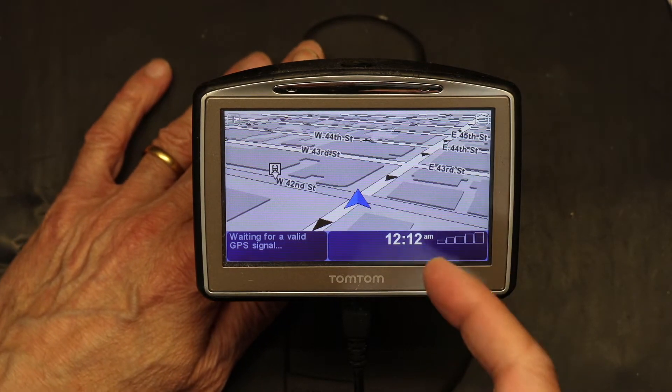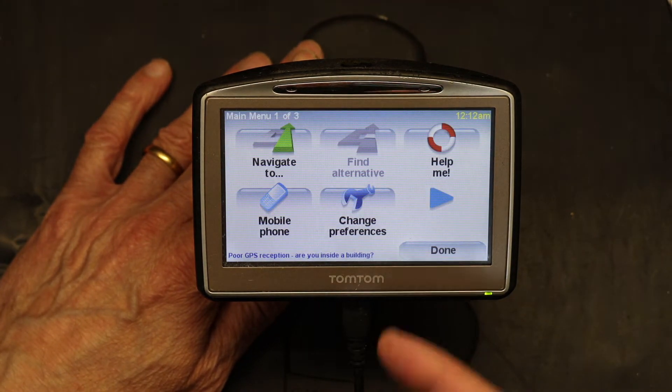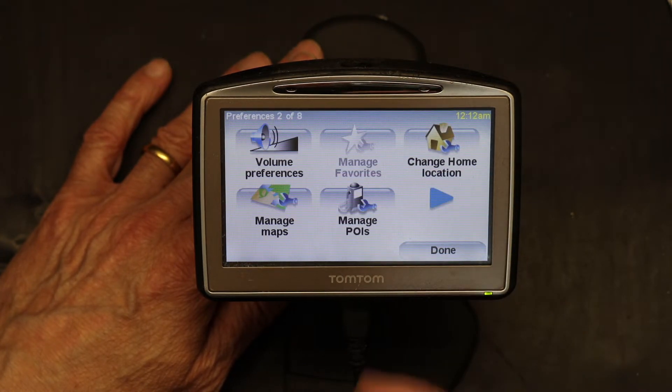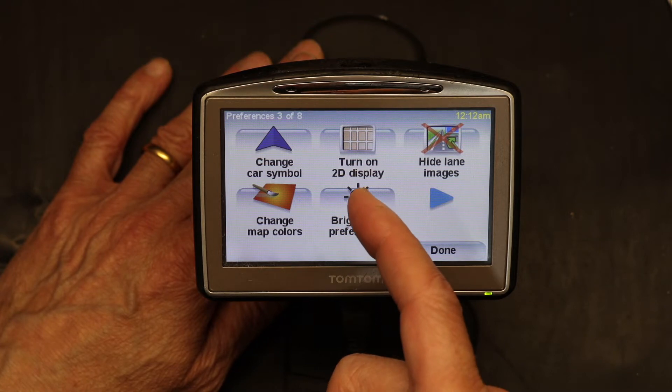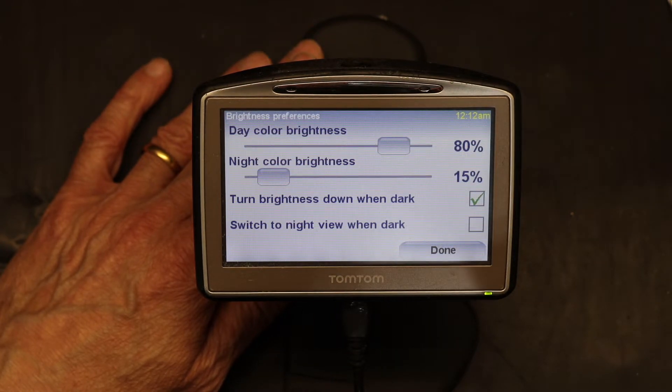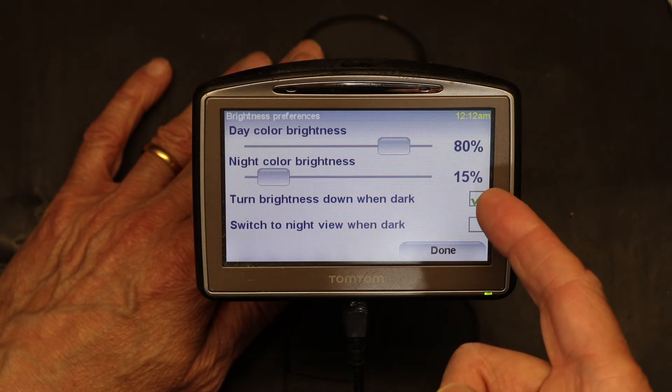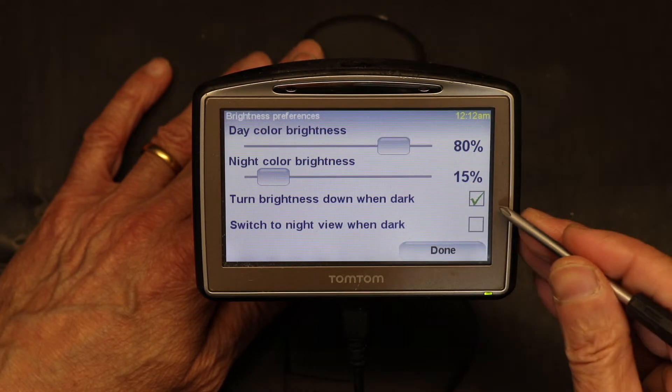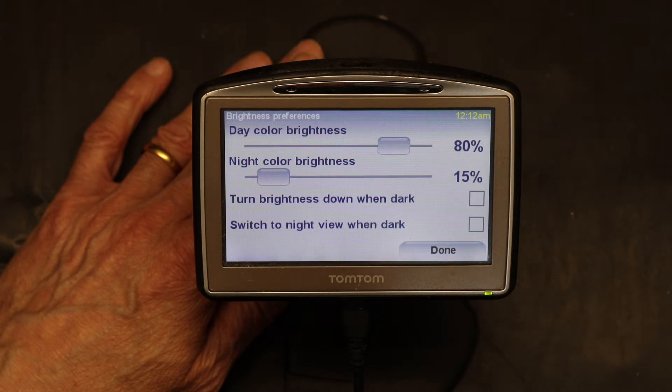Okay, how do we fix this? To do that, we click on the center and then we go to change preferences, then the right arrow, then right arrow again, then we go to brightness preferences. We go to this little box right here and we uncheck that box. Now it is not going to do that.